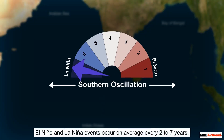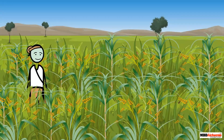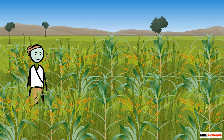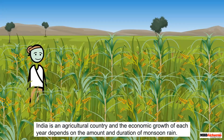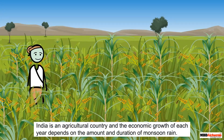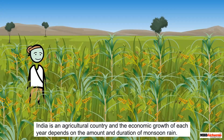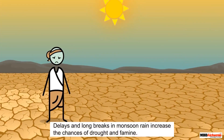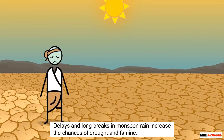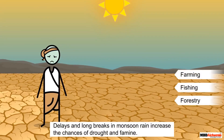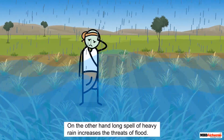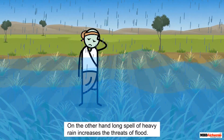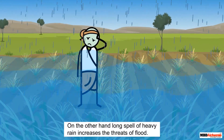El Niño and La Niña events occur on average every 2 to 7 years. The arrival of monsoon rain in India is the most satisfying and joyous moment for the people of India, as India is an agricultural country and the economic growth of each year depends on the amount and duration of monsoon rain. Delays and long breaks in monsoon rain are dangerous for basic occupations such as farming, fishing, and forestry, as chances of drought and famine increase.